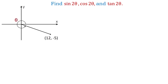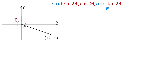Hello. In this problem we have a point with the coordinates 12 and negative 5 and an angle theta in standard position. We need to find sine of 2 theta, cosine of 2 theta, and tangent of 2 theta.